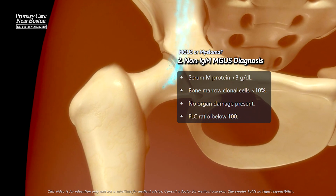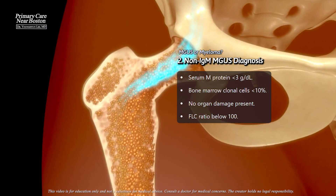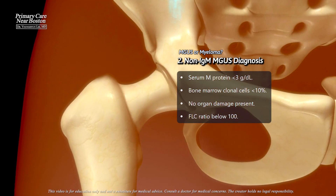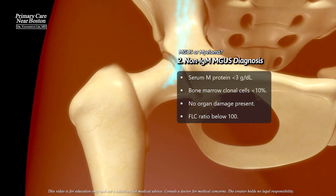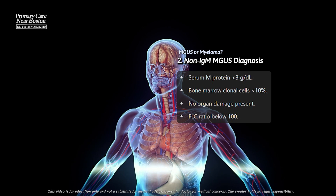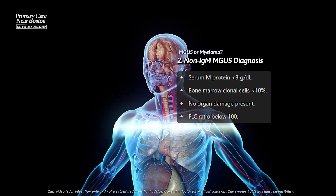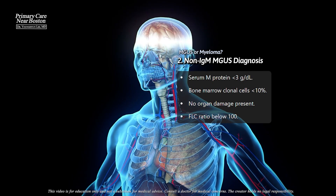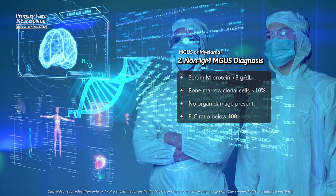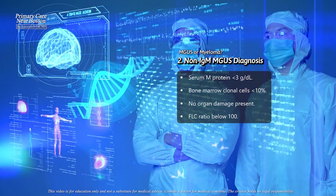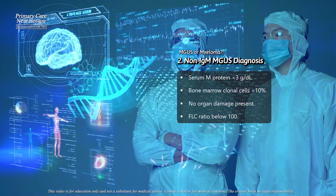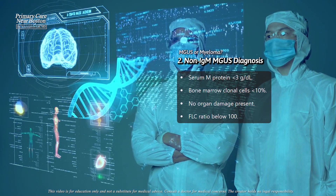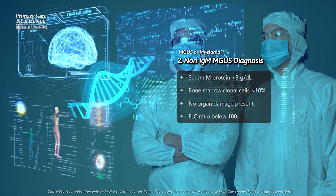Second, the percentage of clonal plasma cells in the bone marrow should be below 10%. Third, there should be no organ damage related to the plasma cell disorder, such as lytic bone lesions, anemia, elevated calcium levels, or kidney impairment.